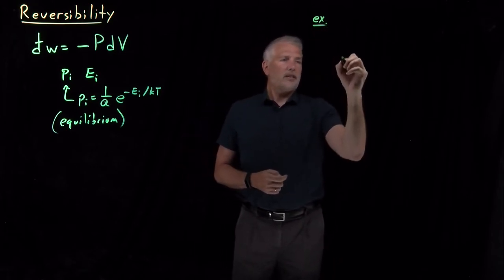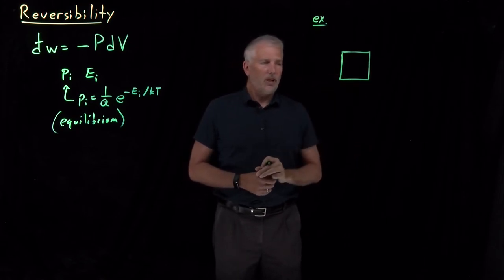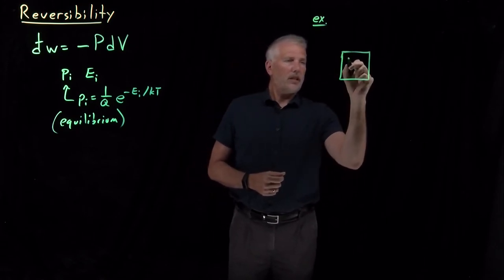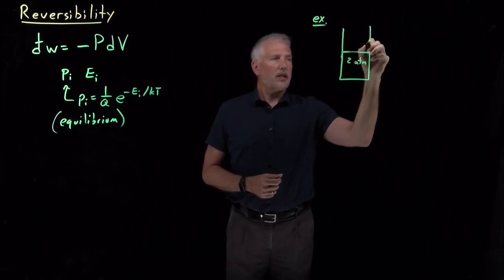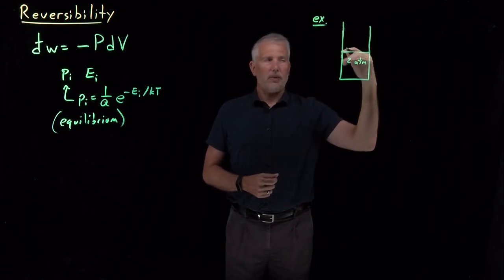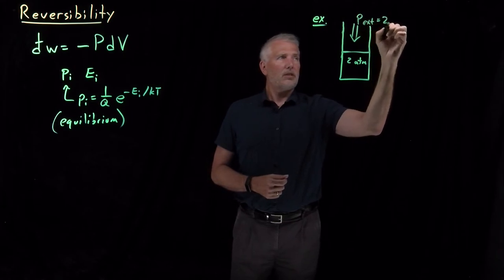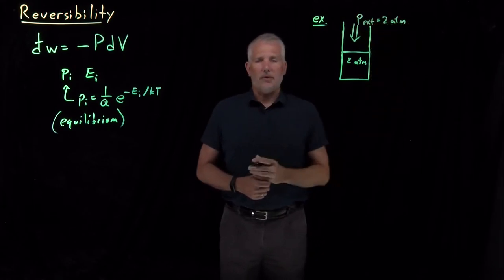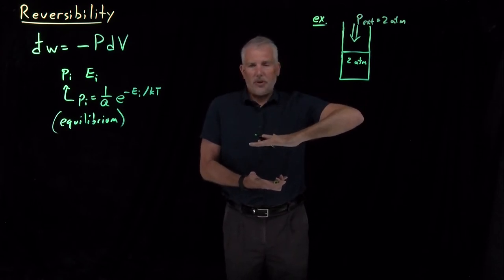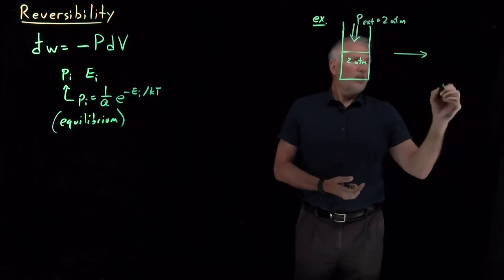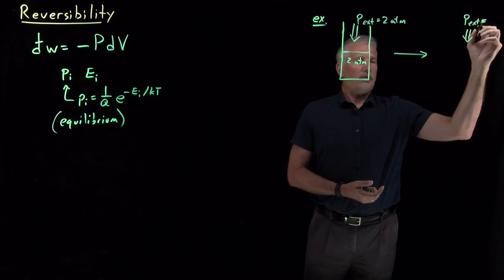Let's say we've got a gas with an initial volume where the gas is at a pressure of two atmospheres inside a piston container — the lid of the box can go up and down. The external pressure is also two atmospheres. The final state of this system is going to have an external pressure of only one atmosphere.